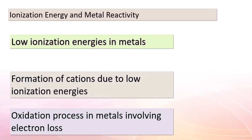Today, we're delving into a vital concept that helps us understand the behavior of elements in chemical reactions. Metals exhibit low ionization energies, meaning they find it relatively easy to shed electrons and form positively charged ions called cations. As a result, metals undergo oxidation — they lose electrons. Among various atomic properties, the first ionization energy is the most telling indicator of whether an element will behave as a metal or a nonmetal, helping us predict how readily an atom will relinquish its electrons.